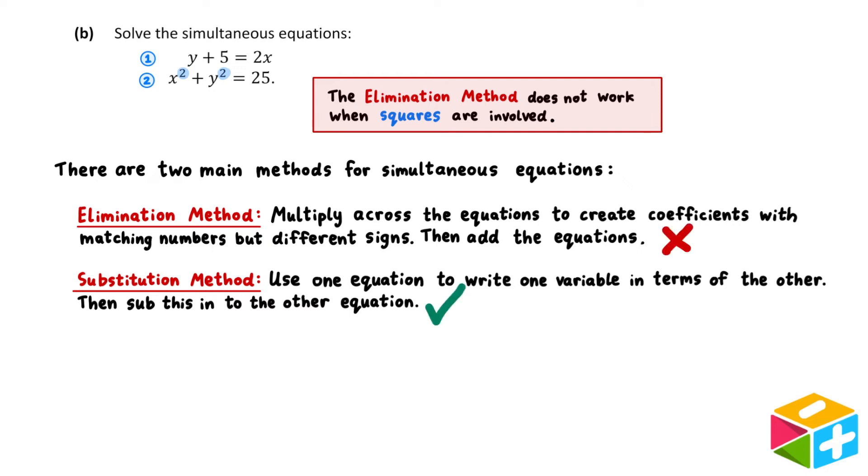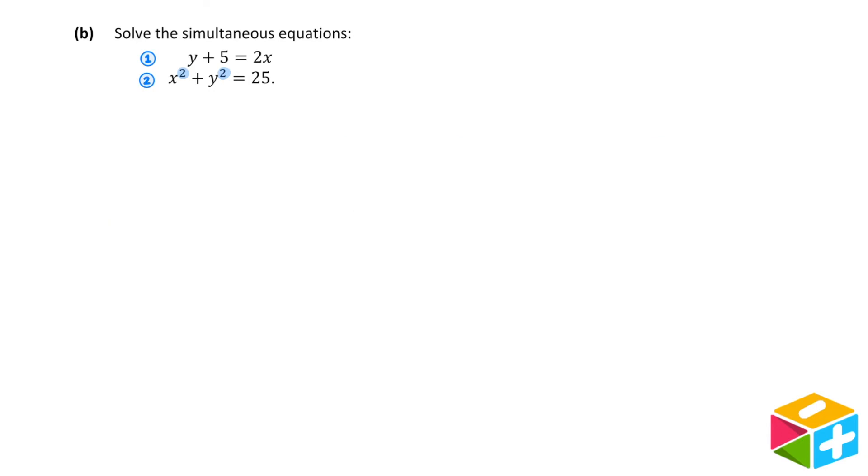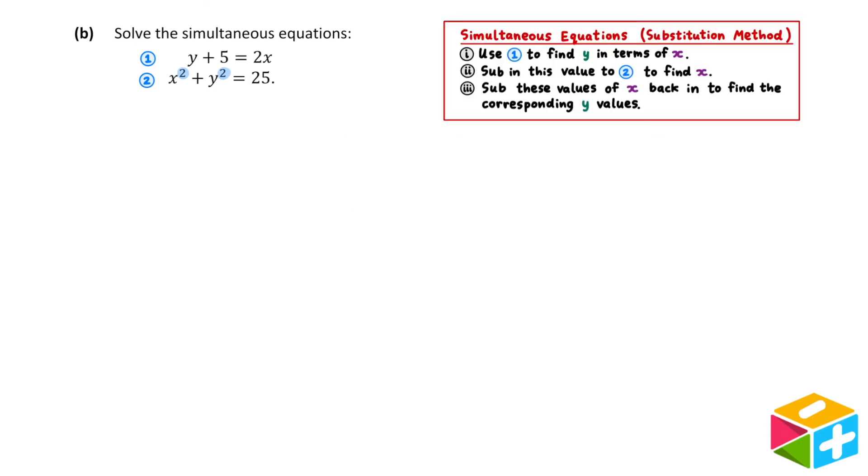So, here, the only option is to use the substitution method. The substitution method involves a number of steps. Step i will be to use equation 1 to find y in terms of x. Step ii will be to sub in this value of y into equation 2 to find x. And step iii is to sub these values of x back in to find the corresponding y values. So, let's start with step i.